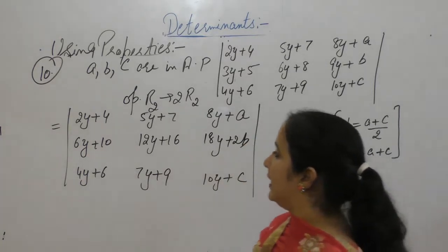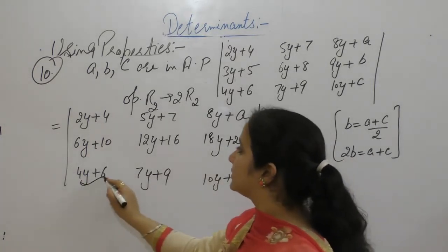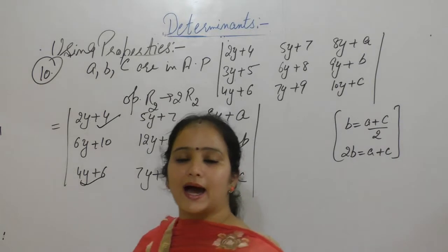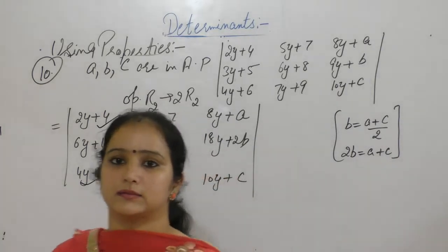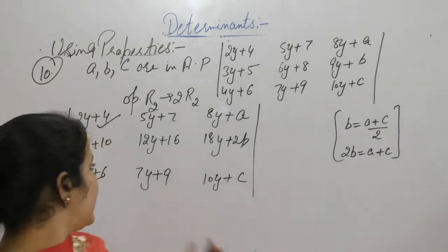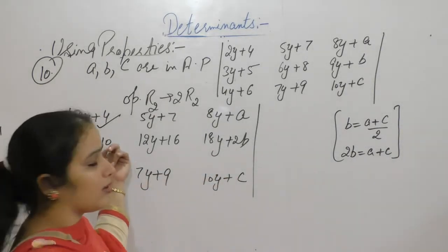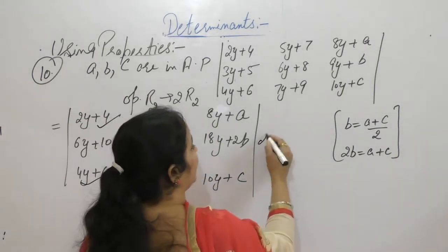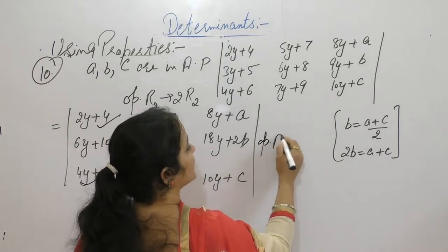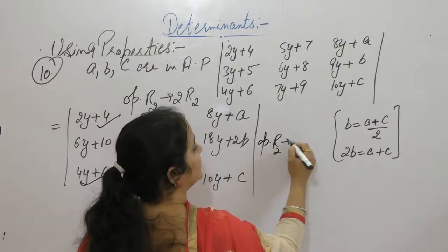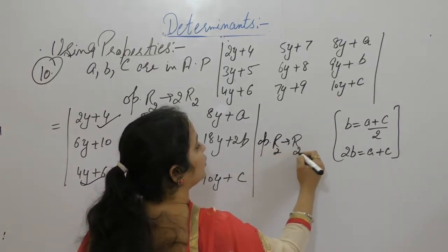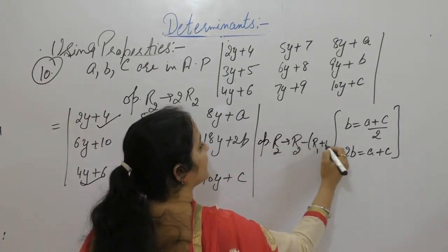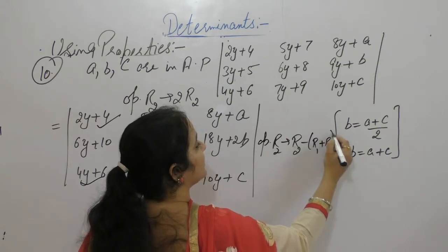Now add R1 and R3 and subtract the sum from row 2. Operate R2 as R2 minus R1 plus R3.